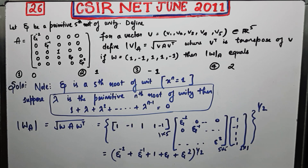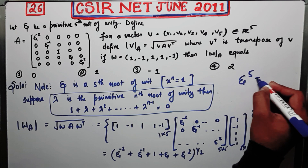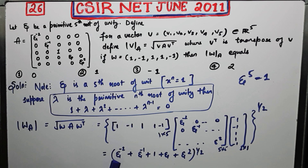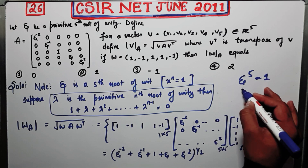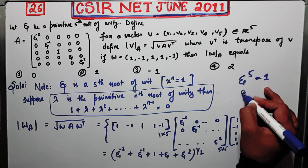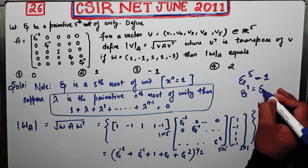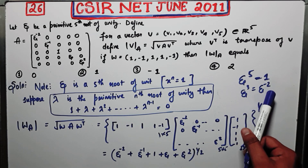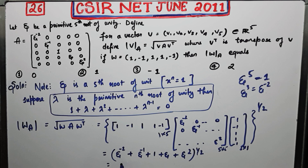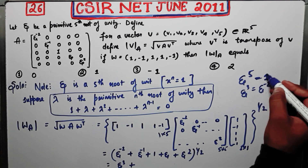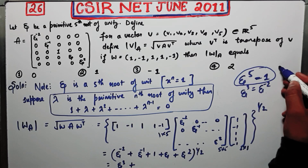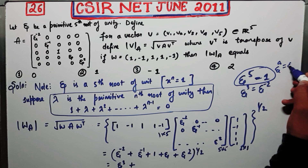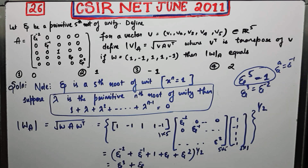Now, you know that xi^5 = 1. So to calculate xi^(-2), multiply the equation xi^5 = 1 by xi^(-2), giving xi^(-2) = xi^3. Similarly, to calculate xi^(-1), multiply by xi^(-1), giving xi^(-1) = xi^4. So the expression becomes xi^3 + xi^3 + xi^4 + 1 + xi + xi^2, which simplifies to xi^3 + xi^4 + 1 + xi + xi^2.